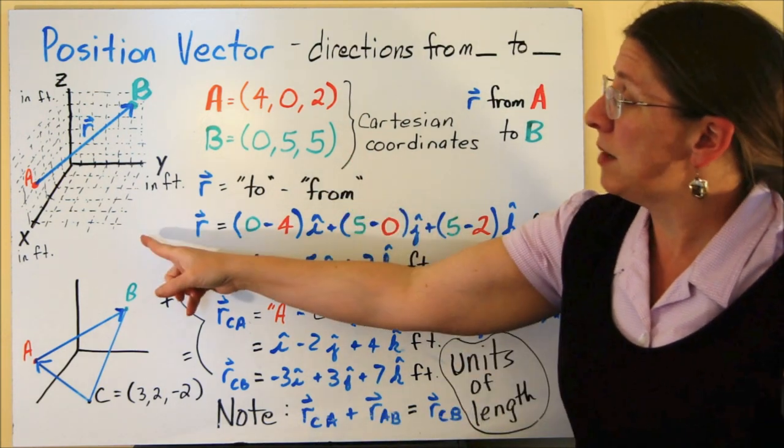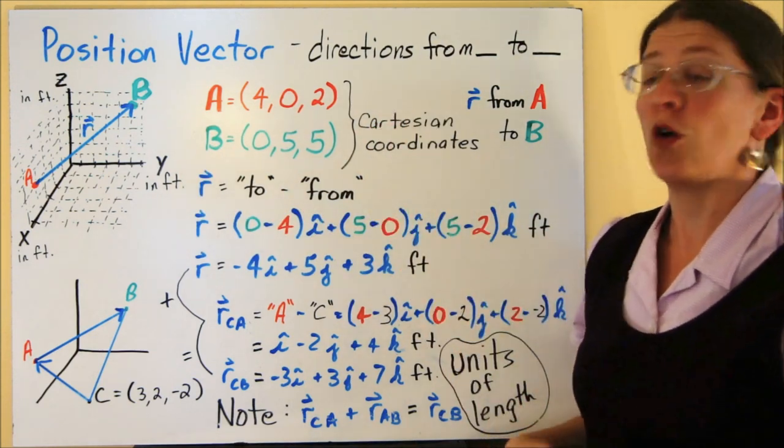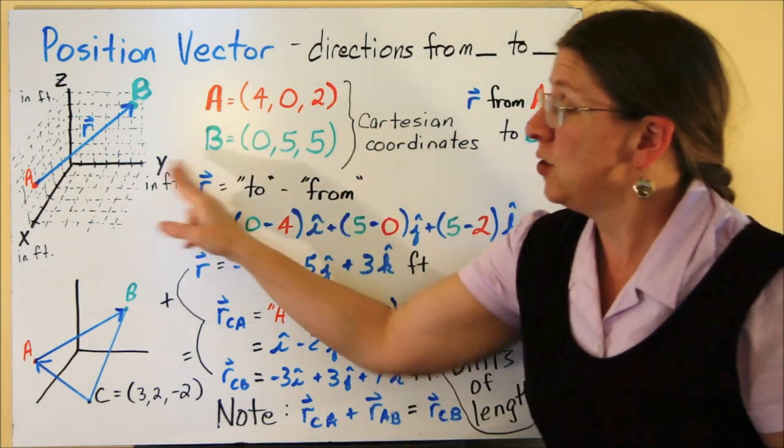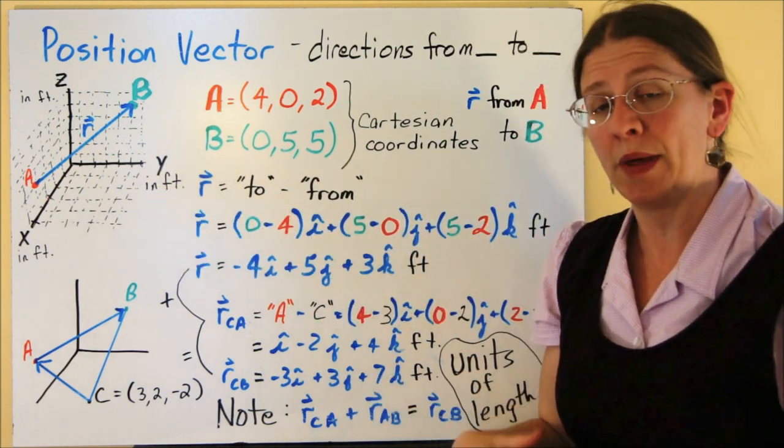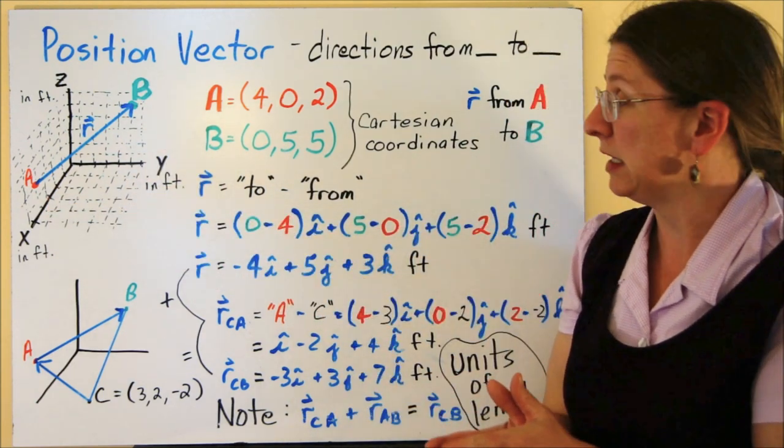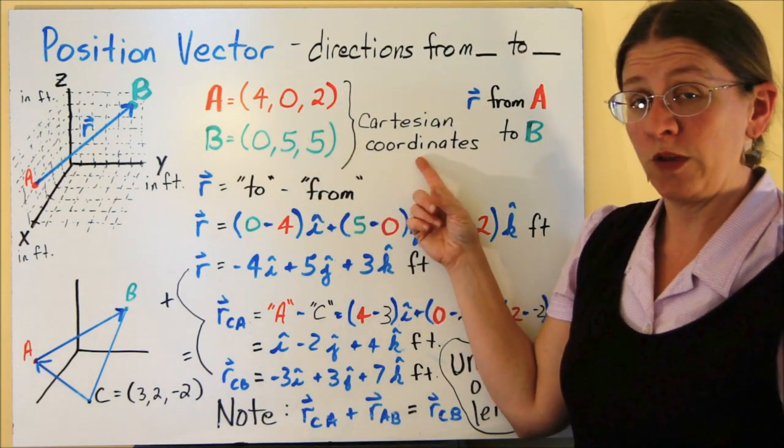So if you look in three dimensions, position vector is still giving so many directions to go from here to there. And I have two points here, A and B. I put a grid in so I hope you can see it a little bit better about where we're talking about these points being. These are the Cartesian coordinates for these points.